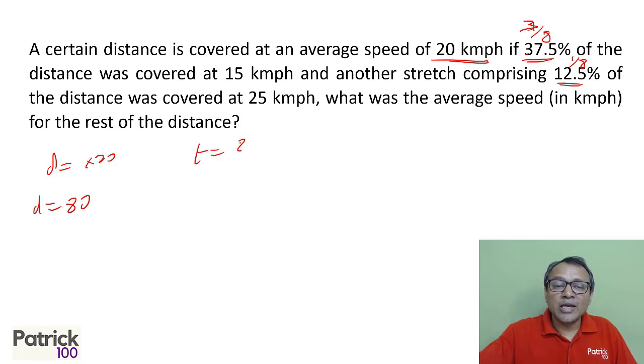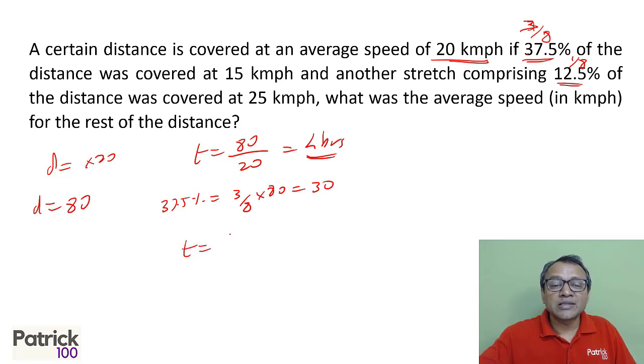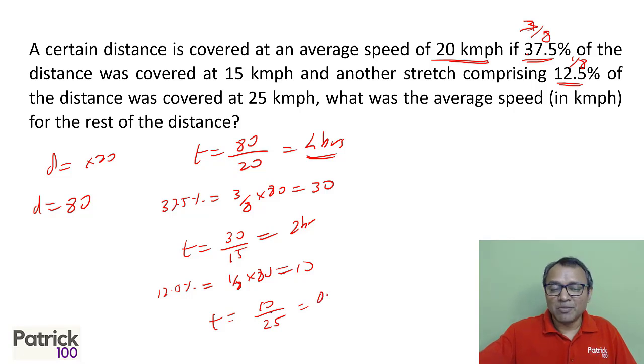So 80 kilometers time taken overall. 80 kilometers at 20 kilometers per hour is 4 hours. This is the overall time. First, 37.5 percent is nothing but 3/8. 3/8 of 80 is nothing but 30 kilometers. Time taken is distance upon speed, which is 2 hours. And last 12.5 percent is 1/8. 1/8 of 80 is 10. Time taken for 10 kilometers at 25 kilometers per hour is 0.4. How much time is left? 4 minus 2 minus 0.4, 1.6 hours is left. How much distance is left? 80 minus 30 minus 10, 40 kilometers.